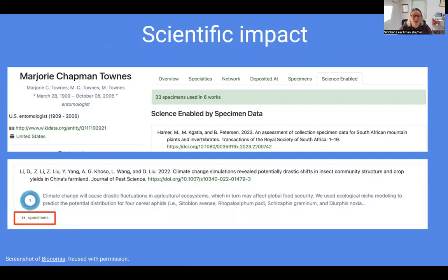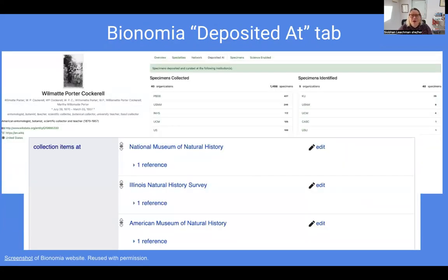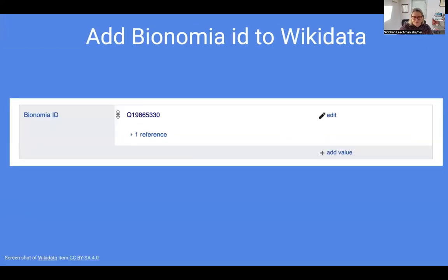For example, here you can see 17 specimens collected by the entomologist Marjorie Townes that were contained in a GBIF dataset, and that dataset was used in research that helped generate a 2022 publication. The Bionomia profile can also tell you what institutions hold specimens collected or identified by an entomologist. This information can then be added to the entomologist's Wikidata item via a 'collection items at' statement. This is important because it can help the natural history institution become better connected in the Wikiverse, and it can also inform the institution whose work is in their collections. If the collector or identifier is deceased, I can then, once I've finished my attribution work, make their collector profile in Bionomia public and add that Bionomia identifier into Wikidata.